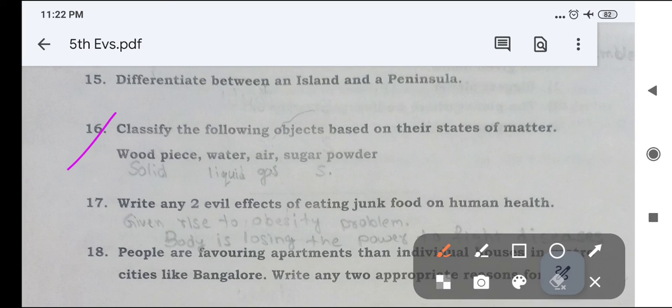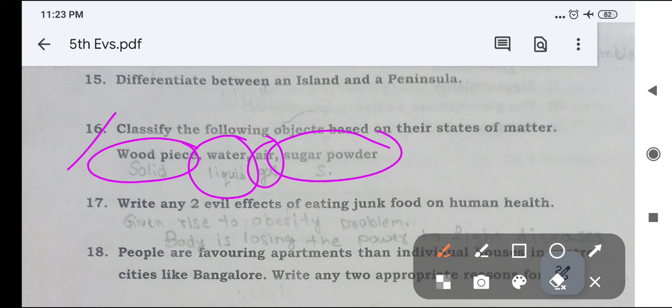Next, 16th question, classify the following objects based on their states of matter: wood piece, water, air, sugar powder. Wood piece is solid, water is liquid, air is gas, sugar powder is solid.